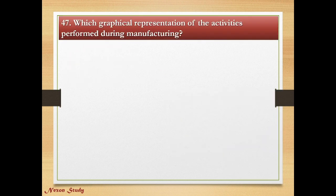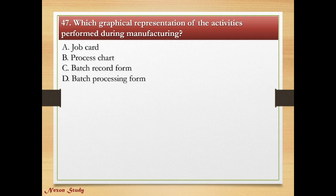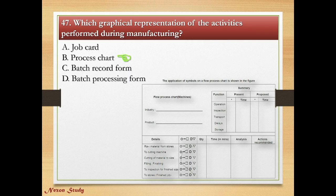Question: Which graphical representation shows the activities performed during manufacturing? Options: job card, process chart, batch record form, batch processing form. Correct answer is process chart. This is one type of process chart.